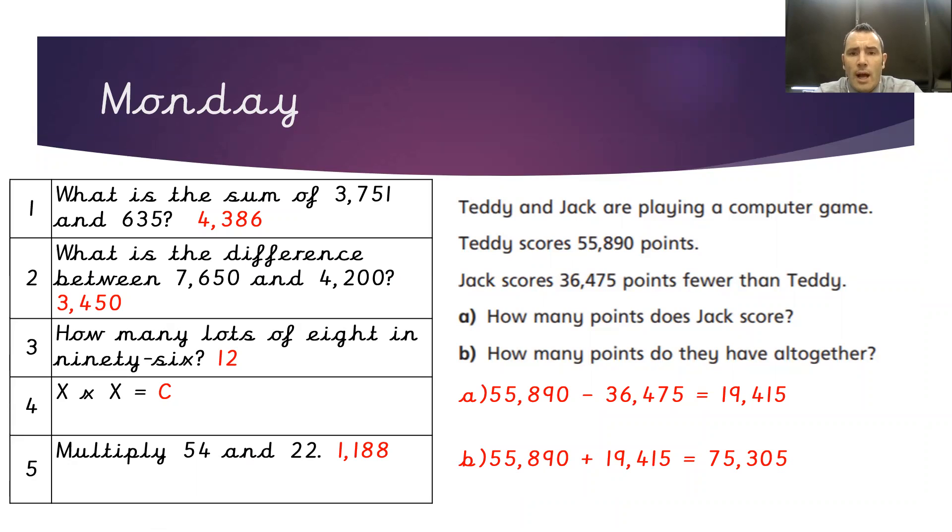So to work out how many points Jack scored, we would need to do the calculation of 55,890 take away 36,475, which will give us a total of 19,415.